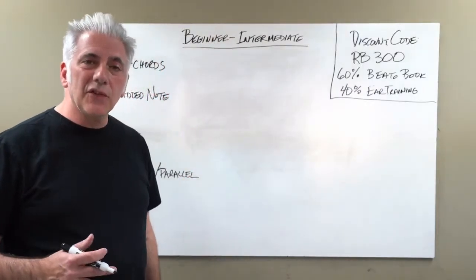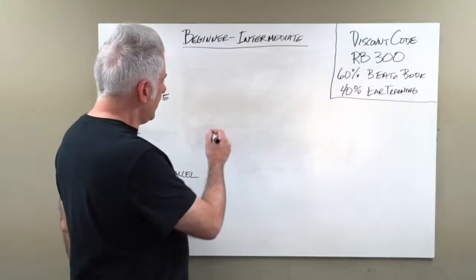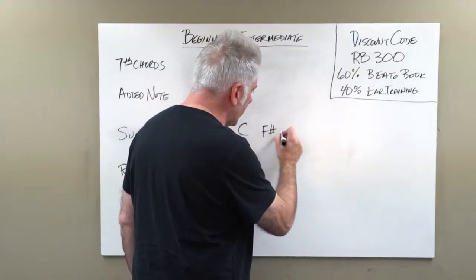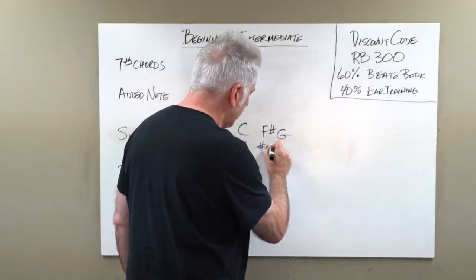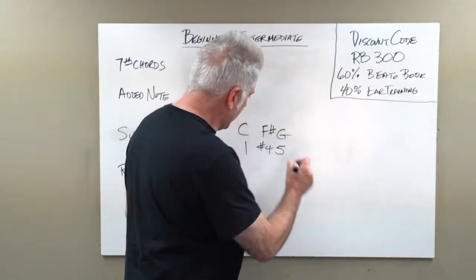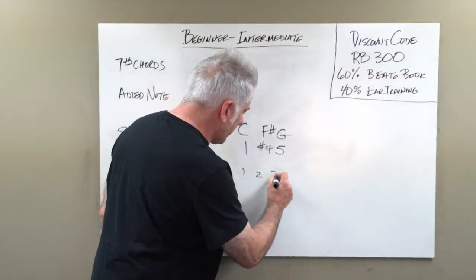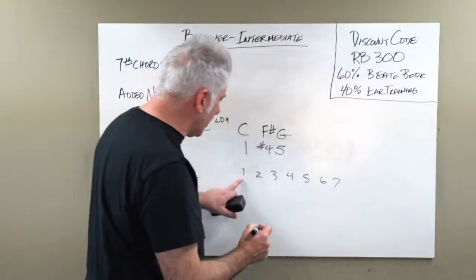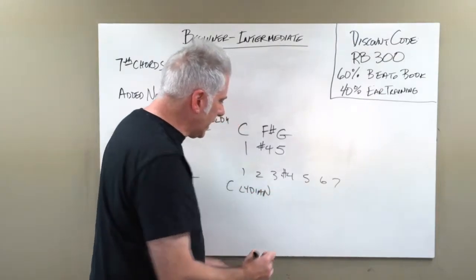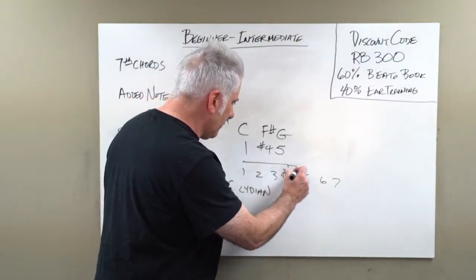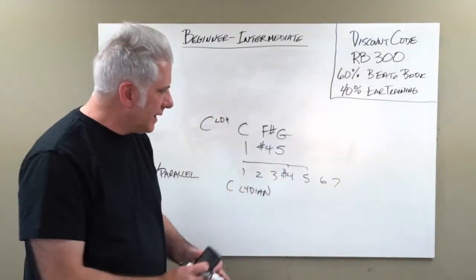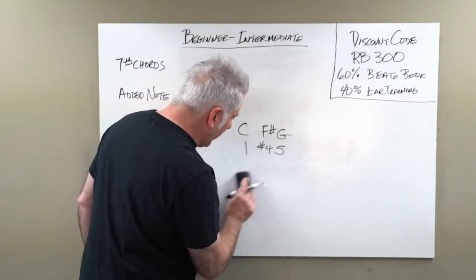Besides sus chords, you have sus sharp 4, what I call the Lydian triad. C Lydian would be 1-sharp 4-5: C, F sharp, G. The C major scale is 1-2-3-4-5-6-7; if you sharp the 4, that's C Lydian mode. So 1-sharp 4-5 are the first, fourth, and fifth notes of the C Lydian mode. That is a very particular sound.